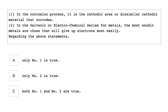Statement one: in the corrosion process it is the cathodic area or dissimilar cathodic material that corrodes. Statement two: in the galvanic or electrochemical series for metals, the most anodic metals are those that will give up electrons most easily. Regarding the above statements, only statement two is true.